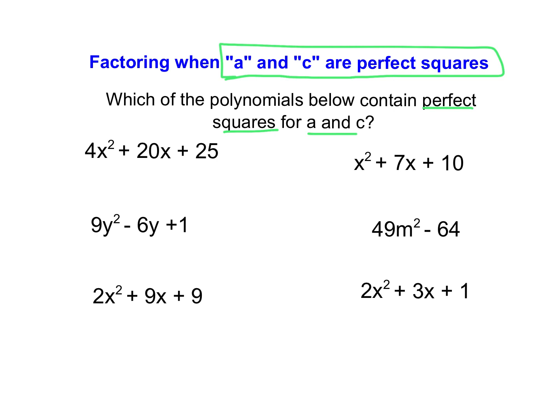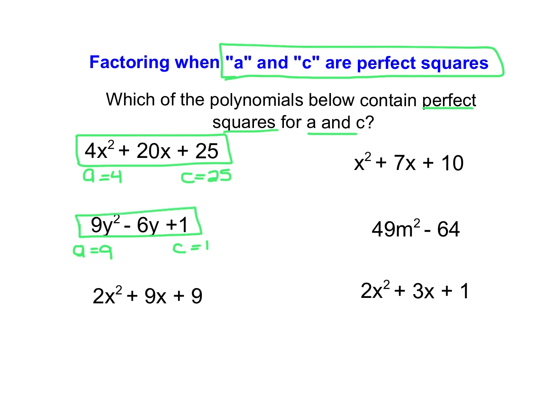If I look at this first example, we have an A value equal to 4 and a C value equal to 25. Both 4 and 25 are perfect squares because they can be perfectly square rooted to produce an integer, and as a result, this strategy would work on this particular expression. Then looking at the next one, we have an A value of 9 and a C value of 1. Again, because both of those can be perfectly square rooted, this will work with the strategy we're discussing.